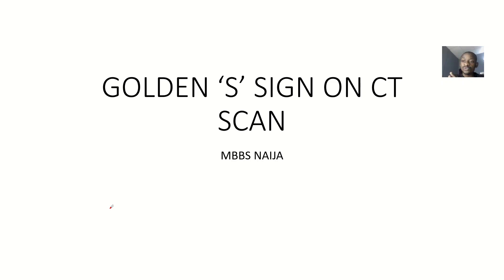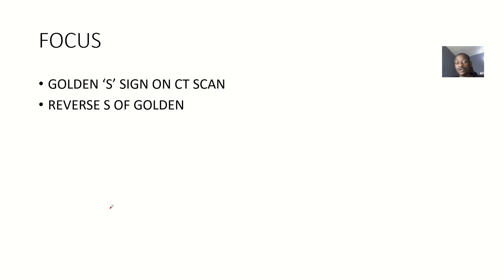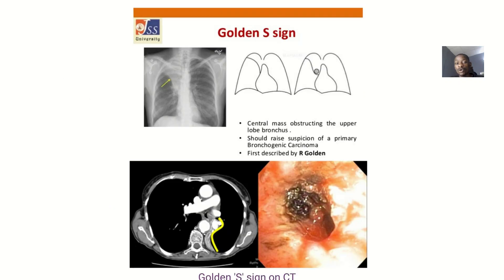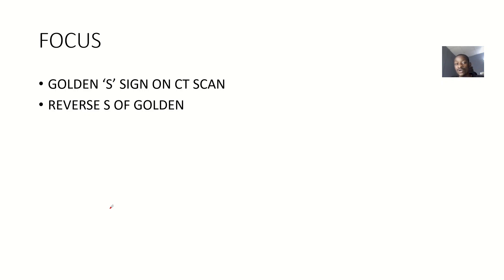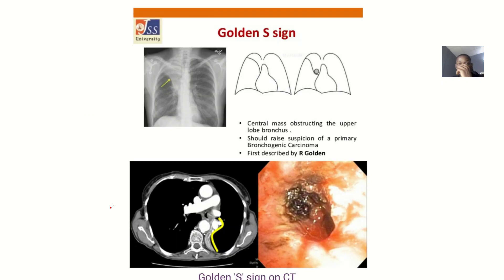There is a notable sign that can be seen on CT scans when observing the lungs. If somebody has a problem with the lungs and you are trying to observe them, there is one important sign that lecturers in school actually emphasize. That sign is called the Golden S sign, or you could say the reverse S of Golden — both terms refer to the same thing.